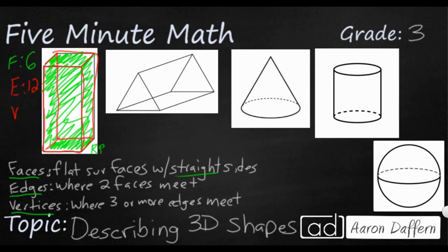And then vertices, as you can see, are where three or more edges meet. A pyramid might have more than three. That's where the three or more edges meet. So sometimes we'll just call them corners. 1, 2, 3, 4 on the top. 1, 2, 3, 4 on the bottom. So that makes for eight vertices.